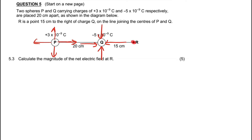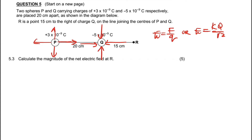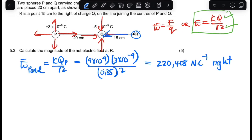The direction of the electric field strength experienced by R due to P is going to go to the right because P is repelling it — pushing it away. So I'm going to calculate the electric field strength of P on R plus the electric field strength of Q on R to get the net. The formula I'll use is E = kQ/r², because I have the charge and the distance.